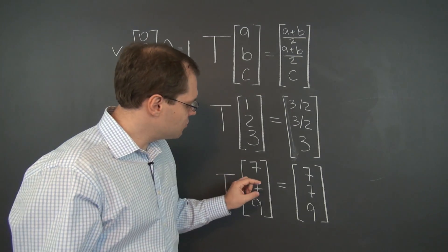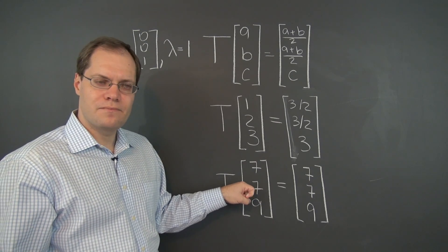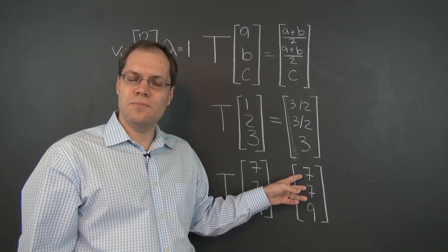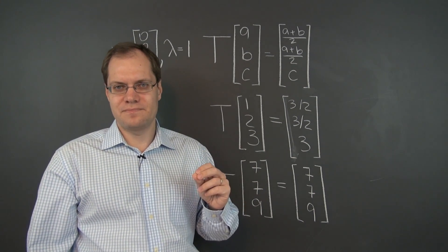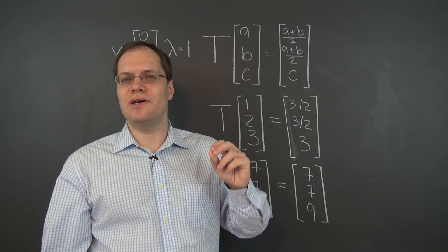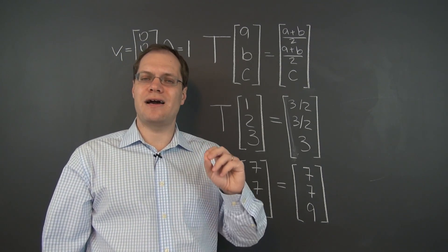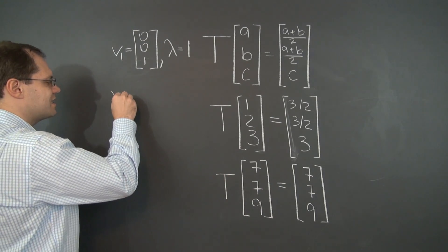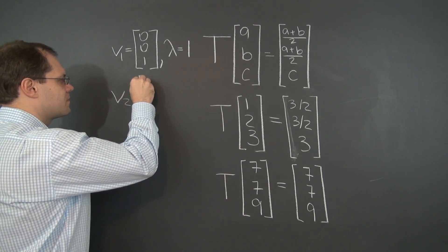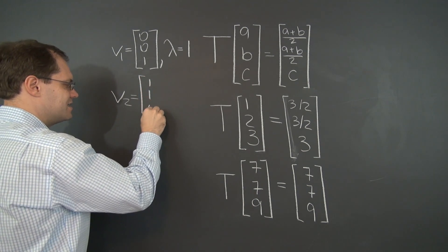So 0, 0, 1 and the corresponding eigenvalue is 1. And then you realize that if these two numbers are the same, then in the output the first two entries will be the same number. And that kind of gets you thinking, and you realize that 1, 1, 0 is the vector that takes advantage of that feature. So 1, 1, 0 is our second eigenvector.